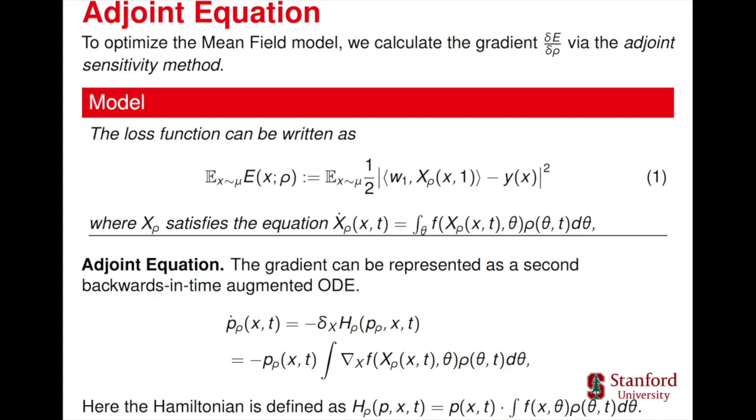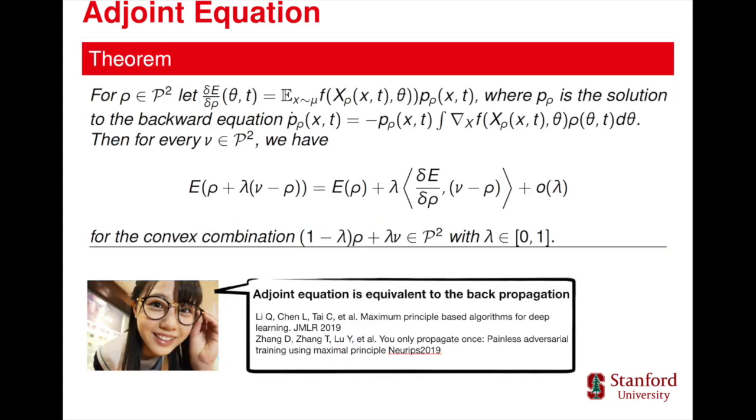Once you have the gradient with respect to the feature map, it's trivial to move it to the gradient with respect to the parameter. We also want to remark that the adjoint sensitivity method can provide the same gradient as back propagation gives you.